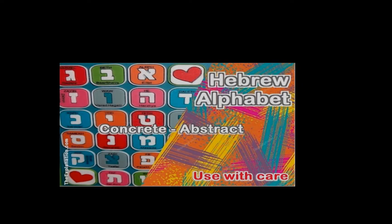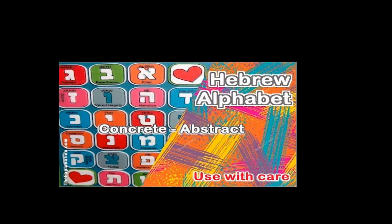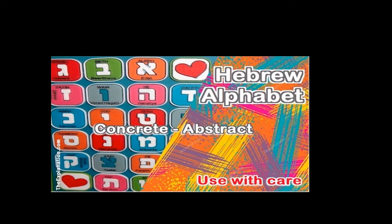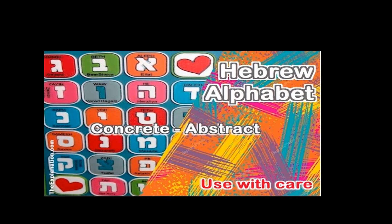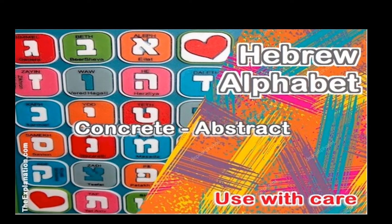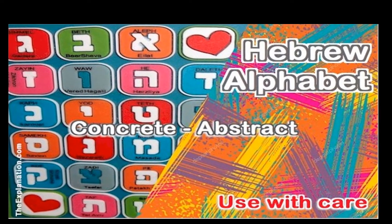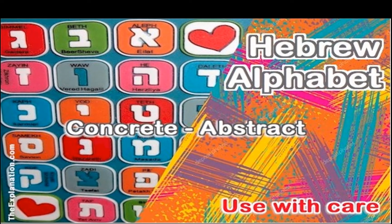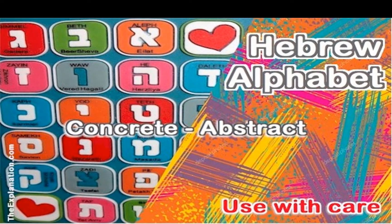The original Hebrew alphabet was composed of concrete symbols like a hand, which also had abstract meanings like worship. This is the third key to Master Biblical Hebrew, but caution is required.